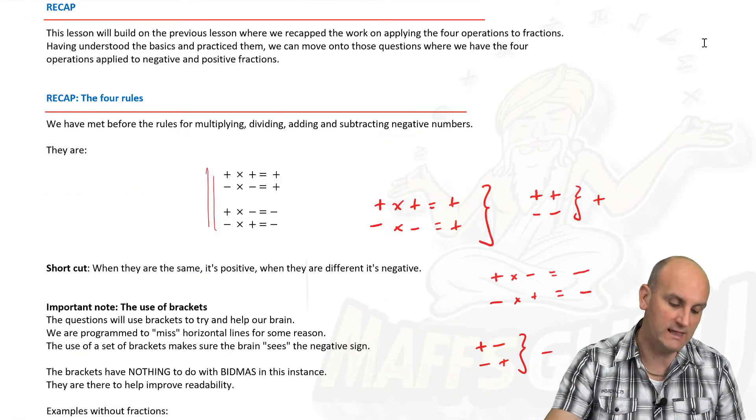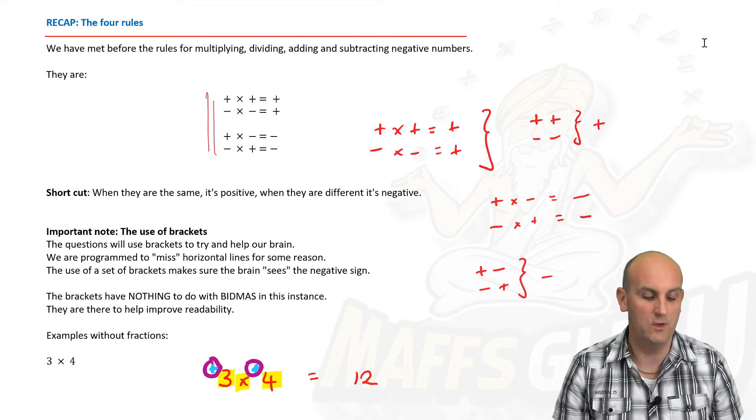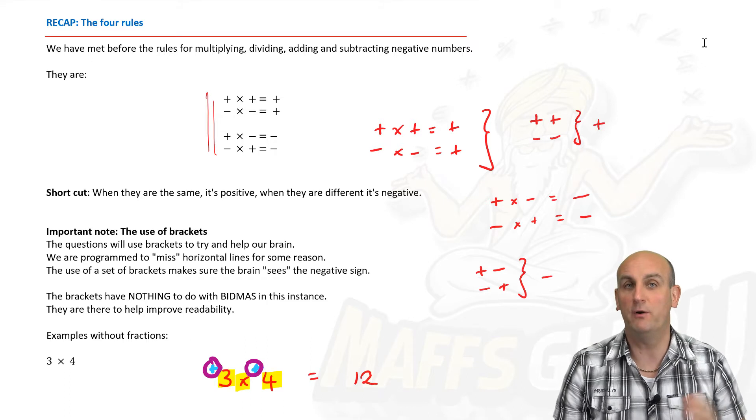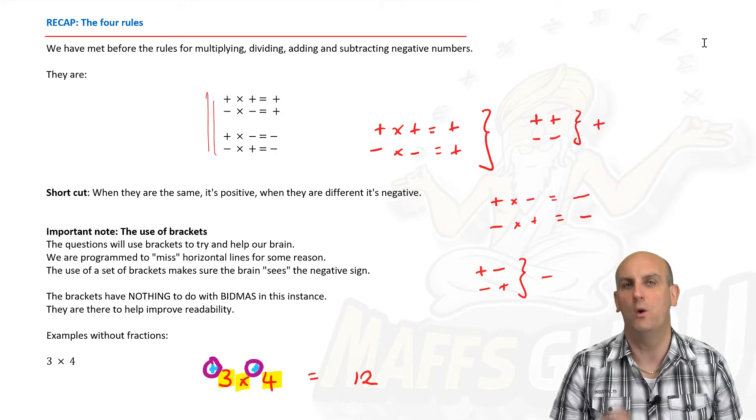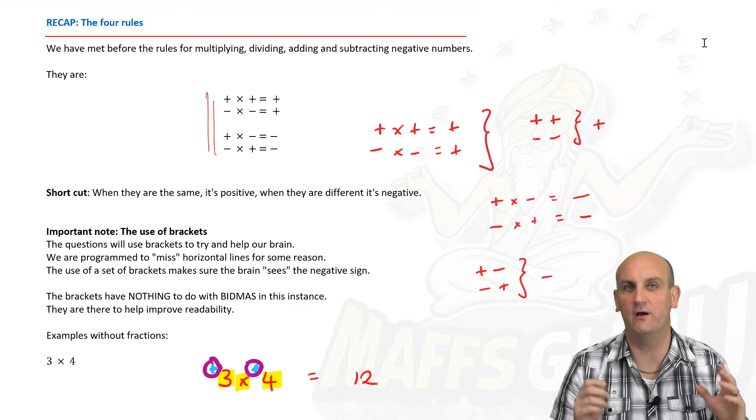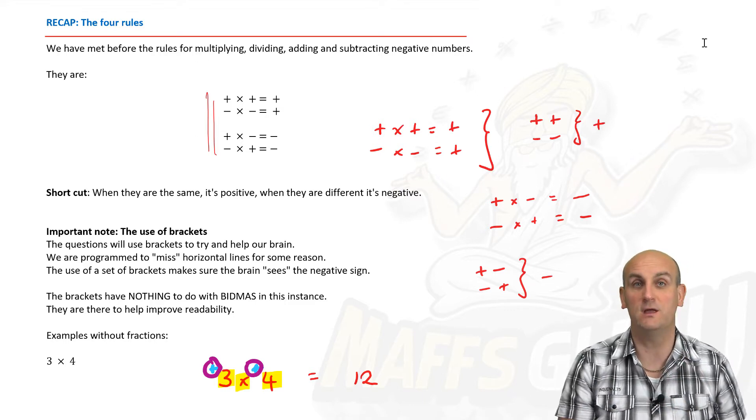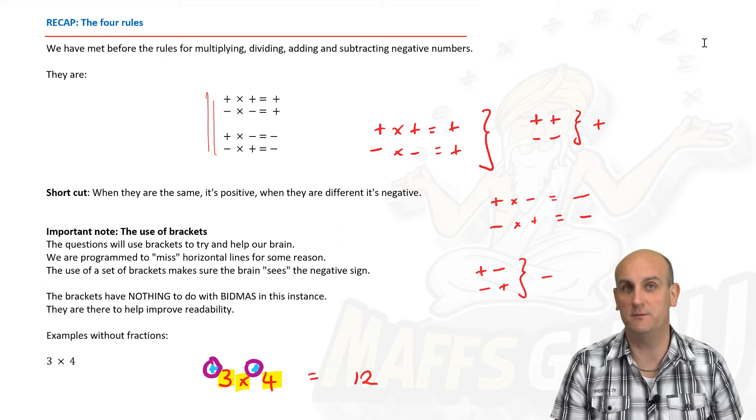Now as a very quick recap, we just did a video on the four rules. A positive and a positive, and a negative and a negative, are equal to one positive. So that's either for multiplication or division, or a little bit of a shortcut that we'll show you in just a moment.